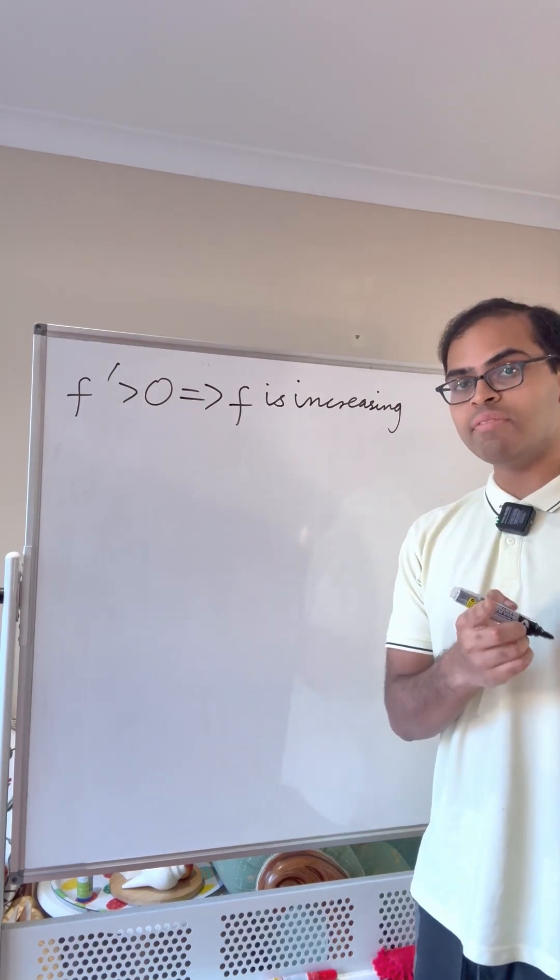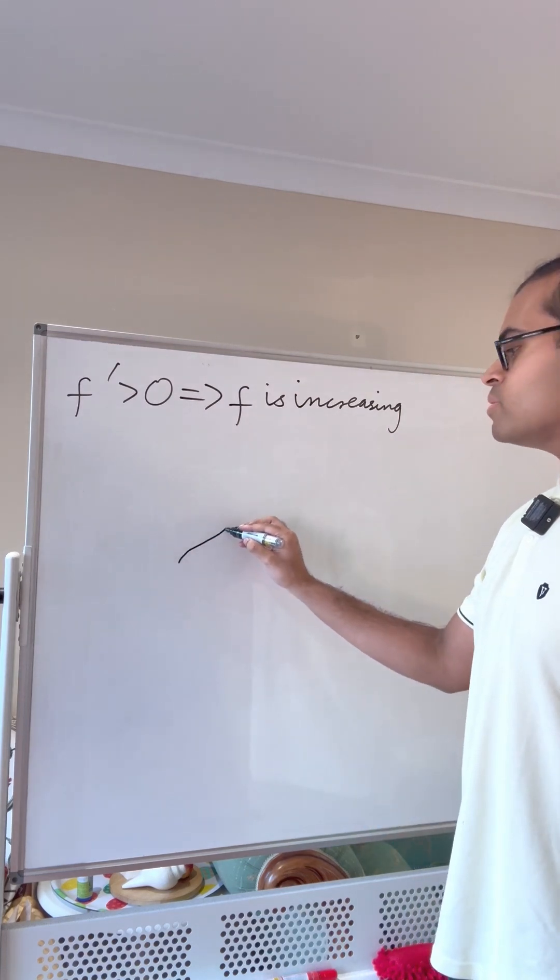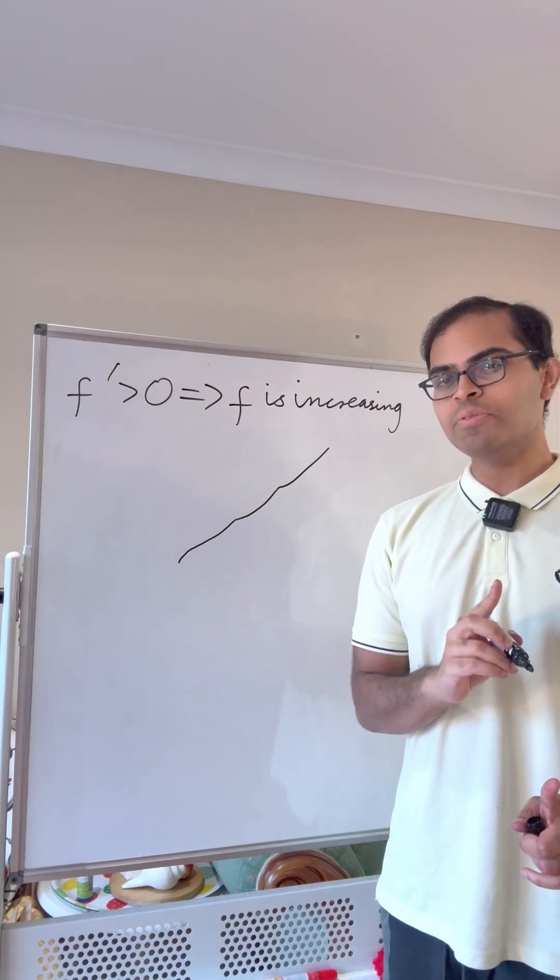Intuitively, it makes sense because the derivative is the slope of the tangent line. So if you think about the graph, it has to always be trending upwards because the derivative is positive. But how do we rigorously prove this?